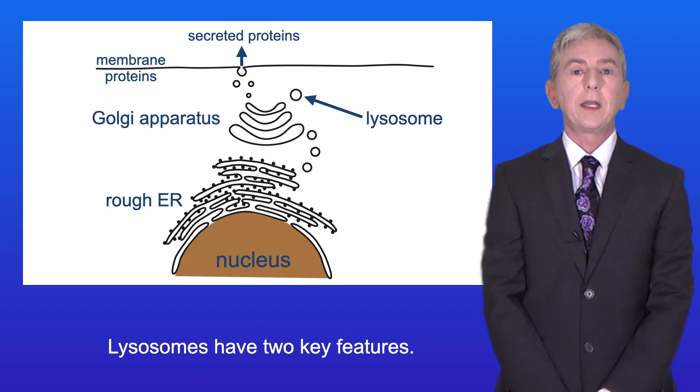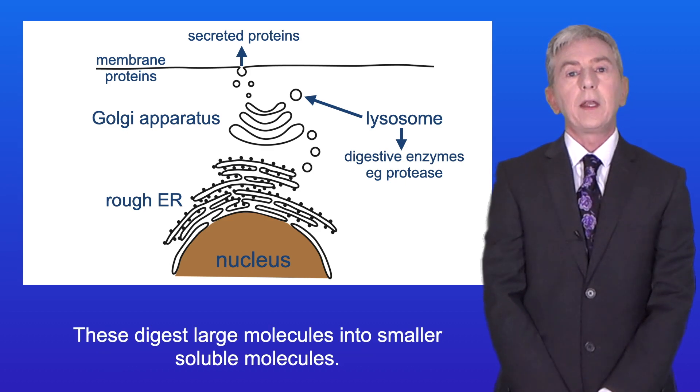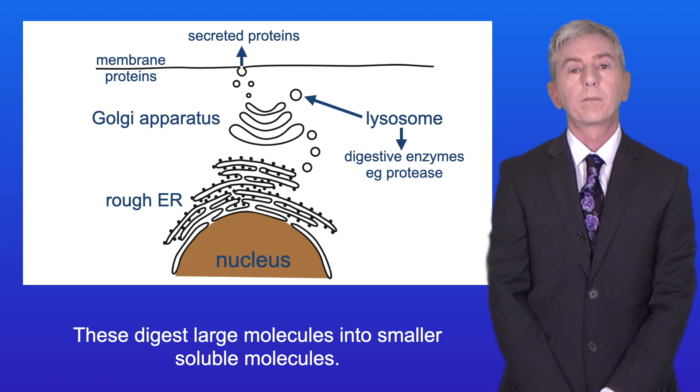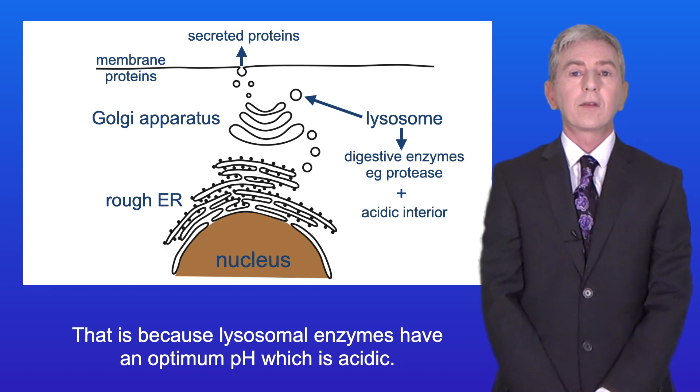Lysosomes have two key features. Firstly, lysosomes contain powerful digestive enzymes such as proteases. These digest large molecules into smaller soluble molecules. Secondly, the internal fluid in a lysosome is acidic. That's because lysosomal enzymes have an optimum pH which is acidic.